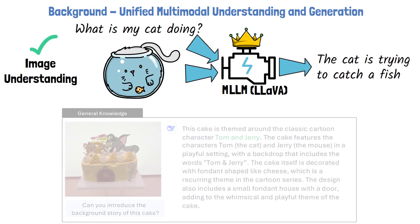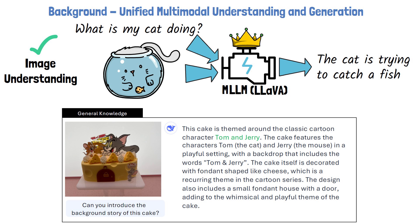Let's take a look at an example from the Janus Pro paper for an image understanding task. Janus is asked about the background story of a cake that is provided as an image. Janus accurately detects that the cake theme is Tom and Jerry, and provides its background story. Not only does the model understand the image, but it also leverages its backbone LLM to provide information beyond the image's scope using the general-purpose knowledge embedded in the LLM.